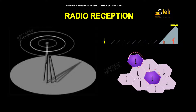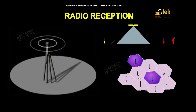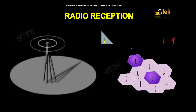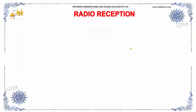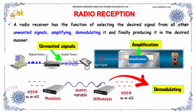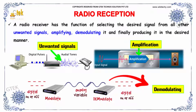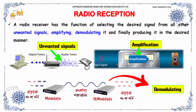Let's move on to radio reception and how it works. A radio receiver has the function of selecting the desired signal from all other unwanted signals, amplifying, demodulating it, and finally producing it in the desired manner.